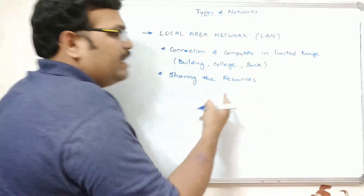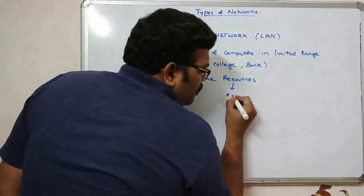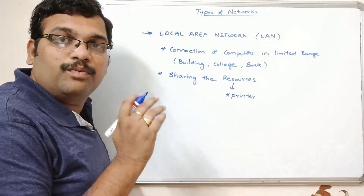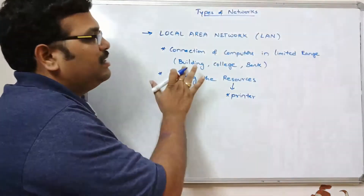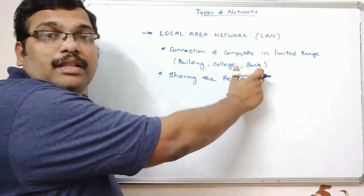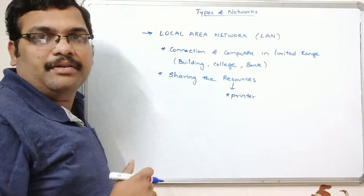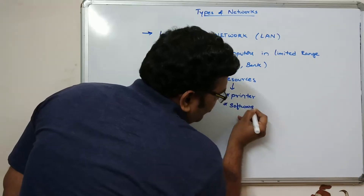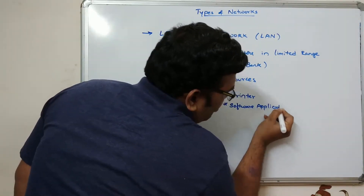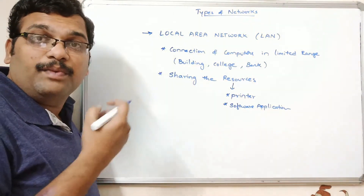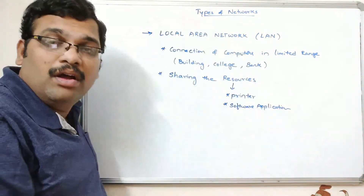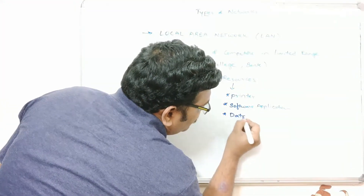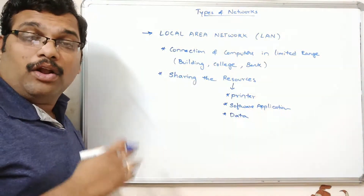Sharing resources means: first, you can have only one printer which is shared among all computers in the specified building, college, or bank. Similarly, a software application can be installed on one system and shared among different computers in a local area network. The third resource is data, which can also be shared among all users.